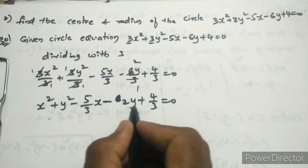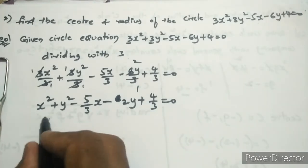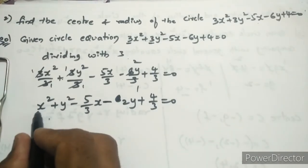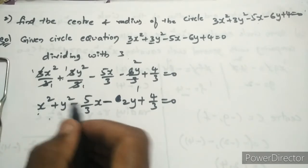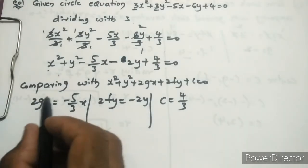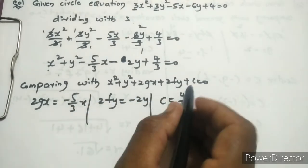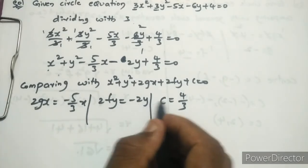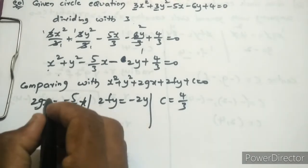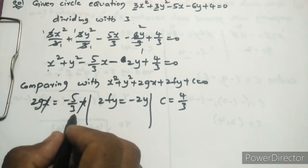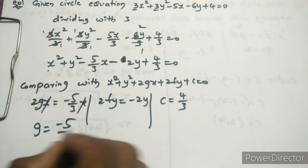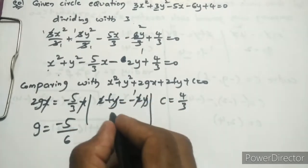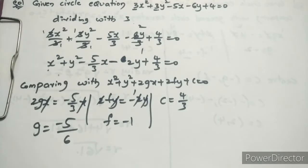Now we can compare with the general equation since the coefficients of x² and y² are 1. Comparing: 2gx = -(5/3)x, so g = -5/6. 2fy = -2y, so f = -1. And c = 4/3.